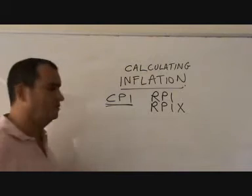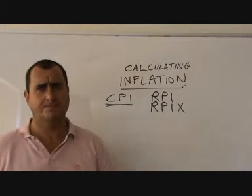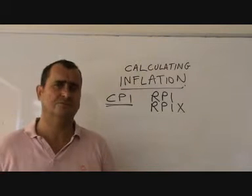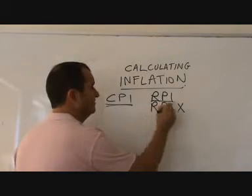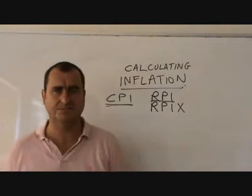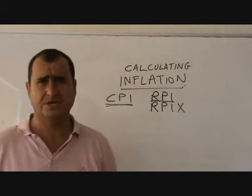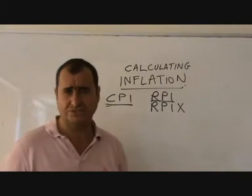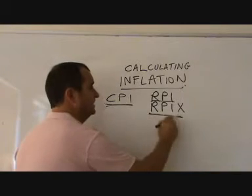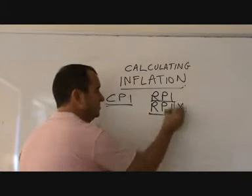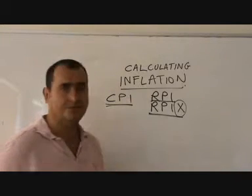The Consumer Price Index only looks at goods which consumers regularly buy from supermarkets and shops — regular purchases. The RPI, or Retail Price Index, is a little more expansive and includes things like housing costs, maintaining houses, and costs associated with rent or mortgage payments. The RPINS is the same as the RPI but excludes mortgage repayments from its calculation.